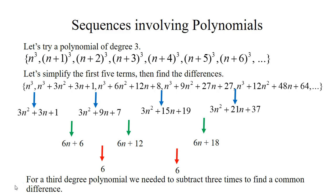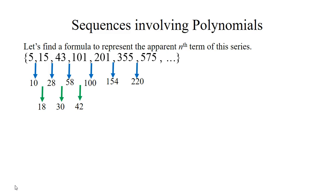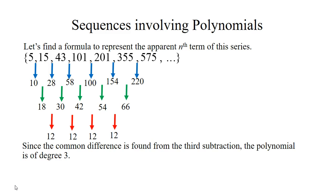Let's try an example. We find our common difference, then do it again, and one more time — and we get 12 as our common difference. So we know it is a degree-3 polynomial of the form an cubed plus bn squared plus cn plus d, and we'll use a matrix to solve a system of equations for a, b, c, and d.